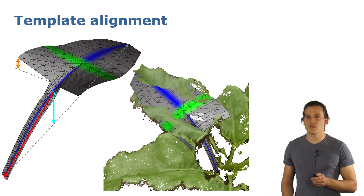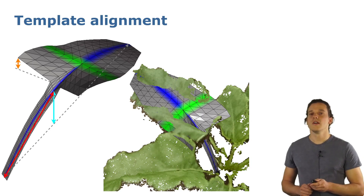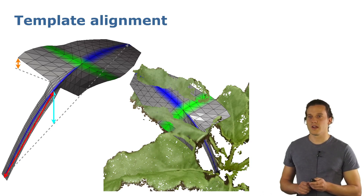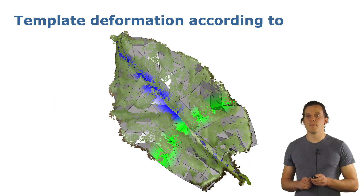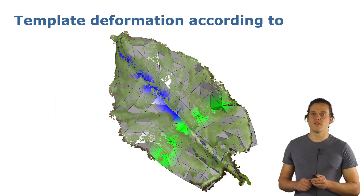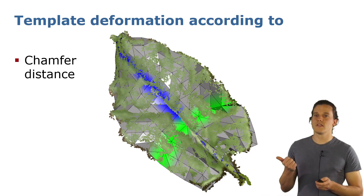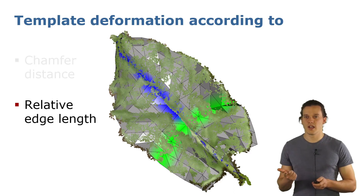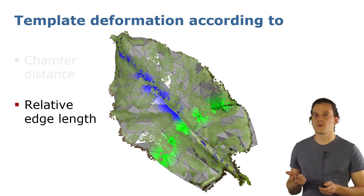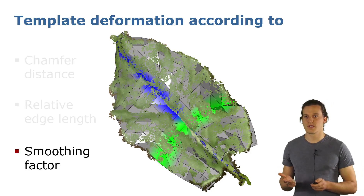These parameters along with the poles are optimized using the least squares approach to align the template to the scan. You can see the resulting alignment here on the right. To get a more accurate fit of the template, we then optimize the position of each vertex according to a loss containing three components. The chamfer distance ensures that the deformed template is close to the scan. The relative edge length variation component encourages the preservation of the leaf shape, and the regularization factor smooths the result.